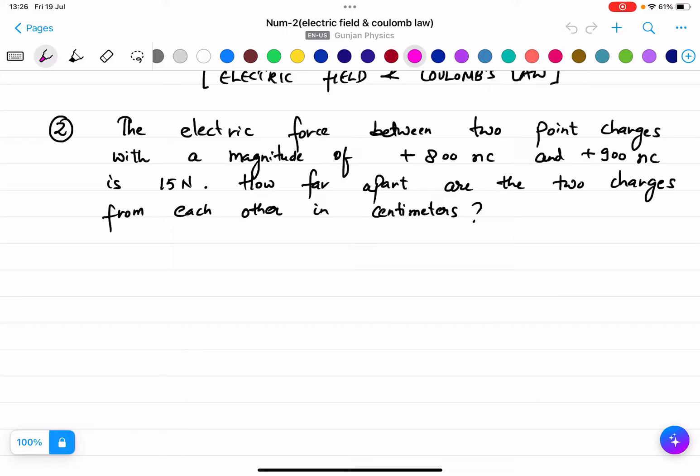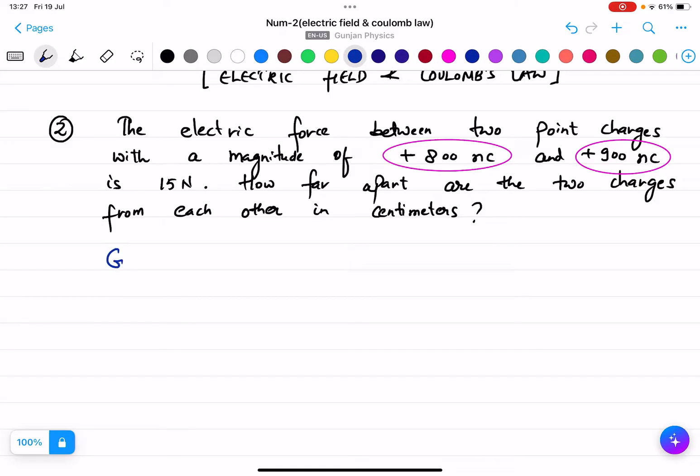The electric force between two point charges with a magnitude of 800 nanocoulomb and 900 nanocoulomb is 15 newtons. So we will write first what is given to us.